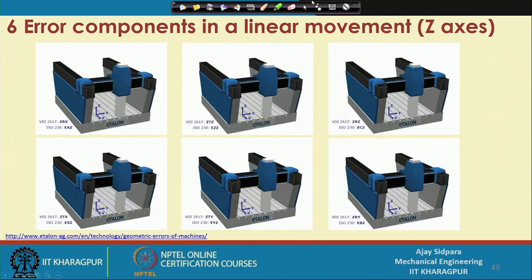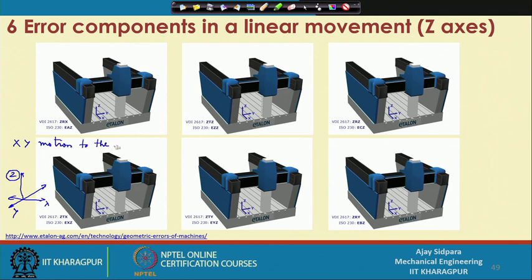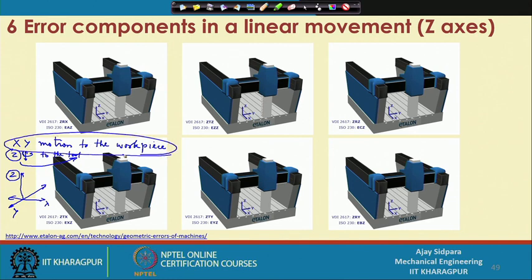Now coming to the z-axis. Earlier we have seen two axes which are the planar axes — the y-axis and the x-axis — and now we are talking about the z-axis. Whatever motion we have seen earlier, mostly we give x and y motion to the work piece, and z motion — that is mostly up and down motion — and rotation to the tool. So the importance of the z-axis is very high; if you get some error it will be directly connected with the tool. X and y are also important but more connected with the work piece, because we give motion in the x-y direction to the work piece but mostly z into the tool direction.